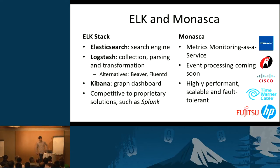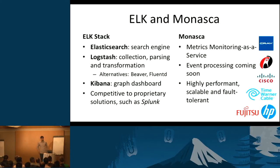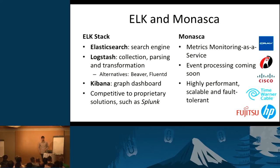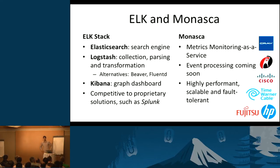On the other side is Monasca — an OpenStack project currently in incubation, hopefully joining the big tent in the next months. It's a monitoring-as-a-service solution that is highly performant, scalable, and fault tolerant — essentially everything you need to run it as a cloud service. HP is also integrating a complex event processing engine for correlation between different events, which we want to leverage for logs. Main players include Fujitsu, HP, Time Warner Cable, Cisco, Rackspace, and Cray.